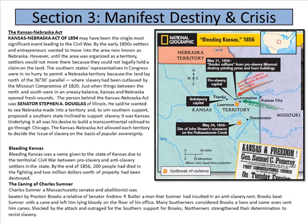Bleeding Kansas was the name given to the state of Kansas due to the territorial civil war between pro-slavery and anti-slavery settlers. By the end of 1856, 200 people had died in fighting and two million dollars worth of property had been destroyed — imagine how much that translates to today.